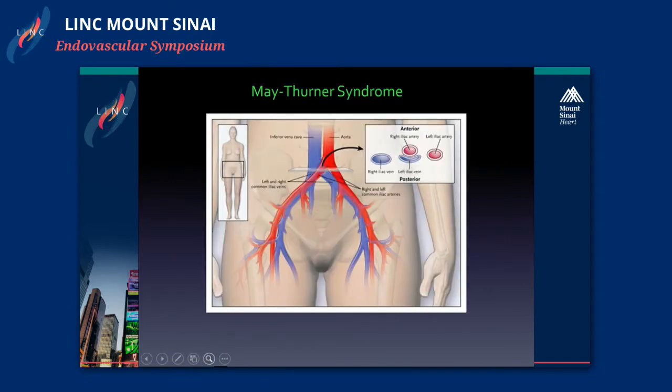This is a very nice picture of May-Thurner pathology. As you all know, May-Thurner is compression of the left common iliac vein by the right common iliac artery as it crosses over to the right side. This is by far the most common type of compression, but it's not the only type.